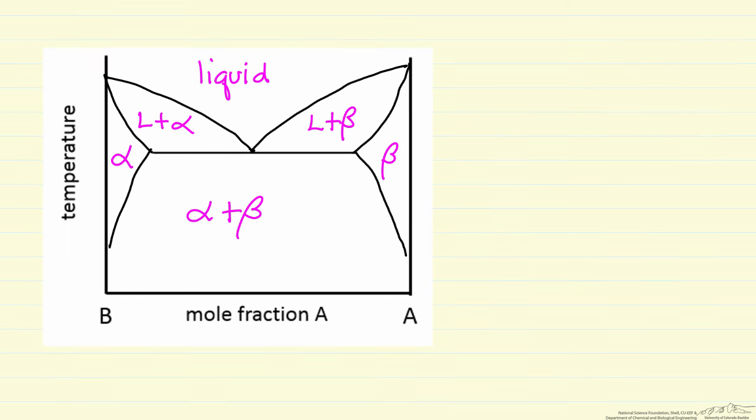So let's suppose we start with this composition in the liquid phase, and we cool down. We hit this line, we start forming the alpha phase, and as we continue to lower the temperature, the alpha phase composition changes, and the liquid phase composition changes until we get again to this eutectic temperature.